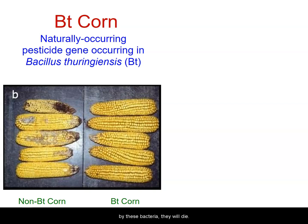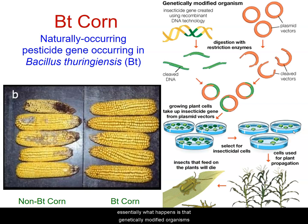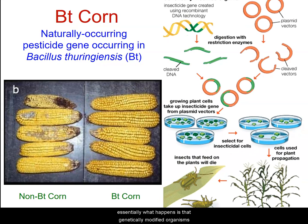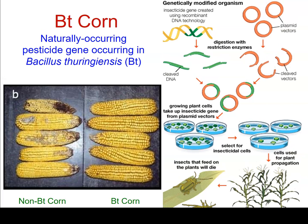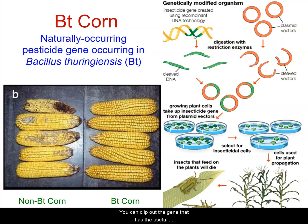So how does this even work? Well, this indicates common ancestry using molecular techniques. Essentially, genetically modified organisms are those where you can take a piece of DNA — you can clip out the gene that has the useful information on it. In this case, the gene encoding for the enzyme that is a natural pesticide produced by Bt. And you can add it into what are called plasmids.